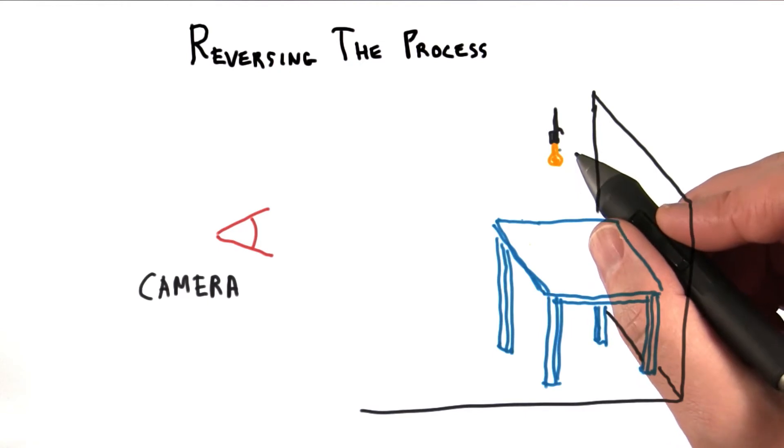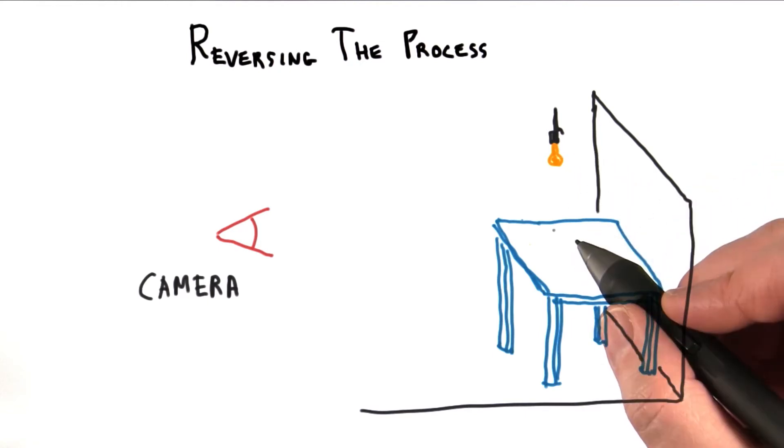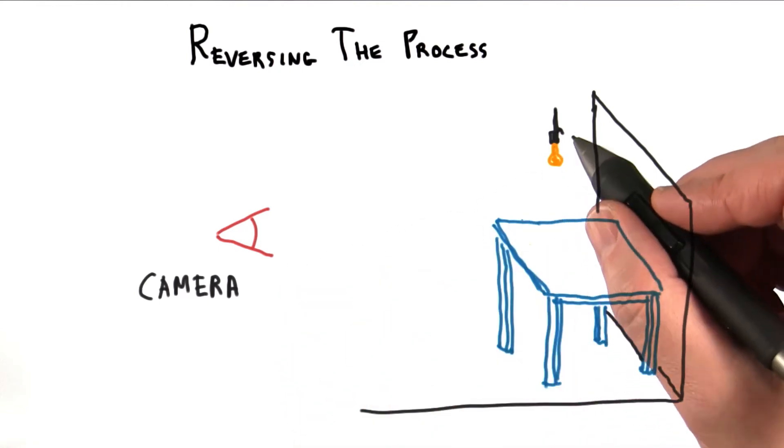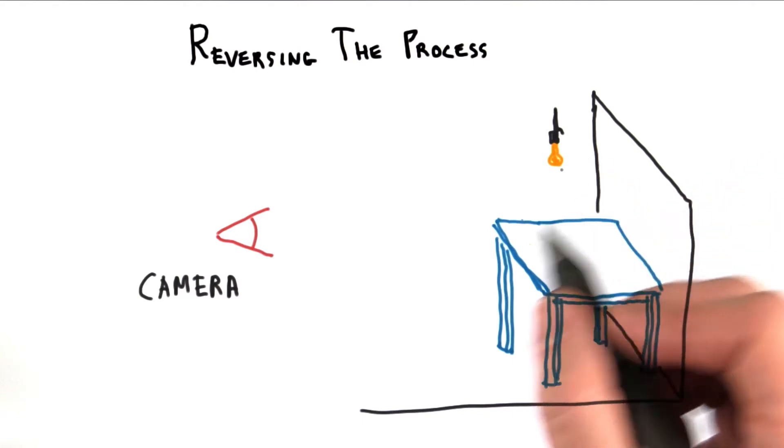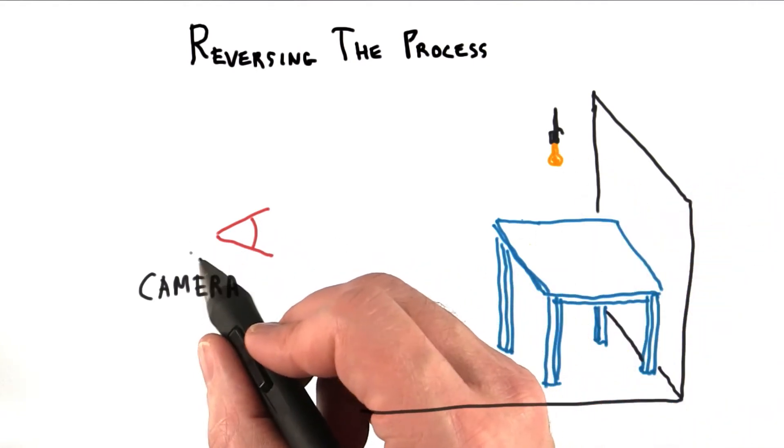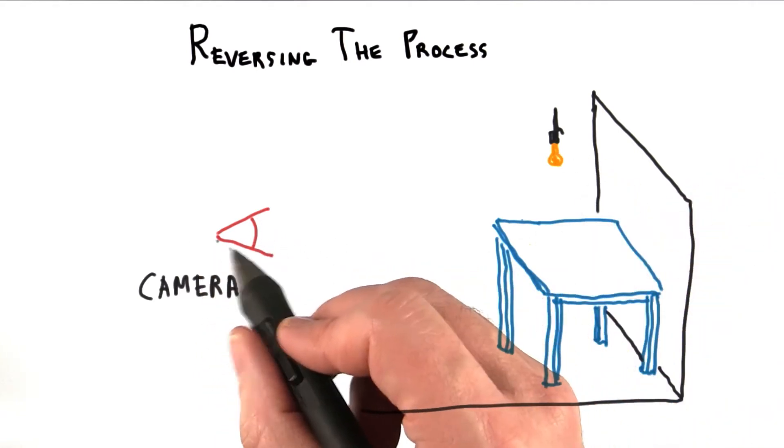Each photon is generated by a light source, but we don't know where each ends up. So, we reverse the process. Instead of sending photons from the light, we essentially cast a ray from the eye through each pixel and see what's out there.